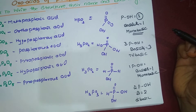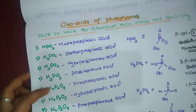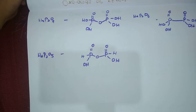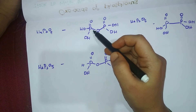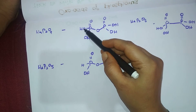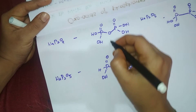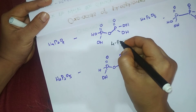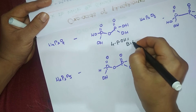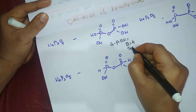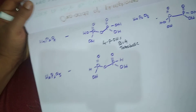Next is H₄P₂O₇, called pyrophosphoric acid. Counting the P-OH bonds: 1, 2, 3, 4. There are four P-OH bonds, so the basicity is 4 and it is tetrabasic in nature.